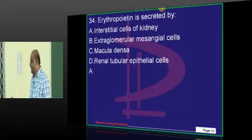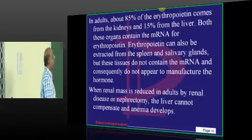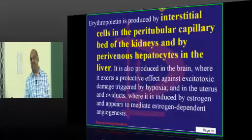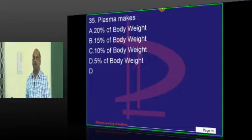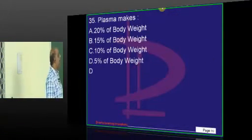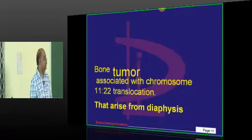Erythropoietin is produced by the interstitial cells of the kidney, peritubular capillary bed of the kidneys, and the perivenous hepatocytes in the liver. What is plasma? Normal plasma is about 5% of the body weight. Okay doc, should be an answer for this question.